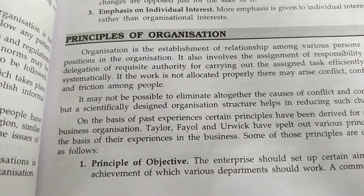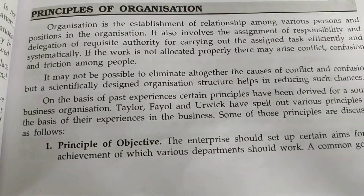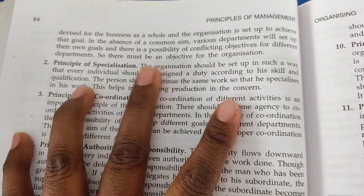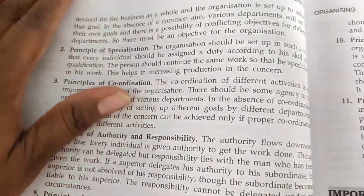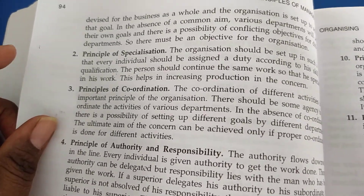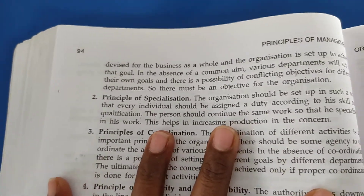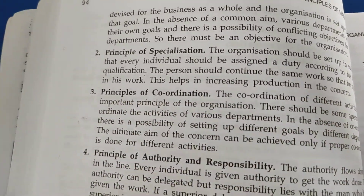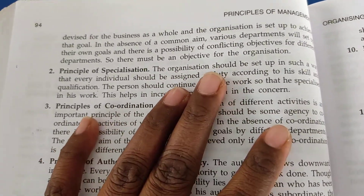The first principle is the principle of objective. The enterprise should set up certain aims for the achievement of which various departments should work. A common goal is devised for the business as a whole, and the organization is set up to achieve that goal. In the absence of a common aim, various departments will set up their own goals, leading to conflicting objectives. Each and every employee and management working there must have reaching the objective as their final goal.